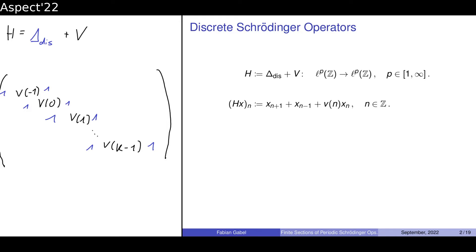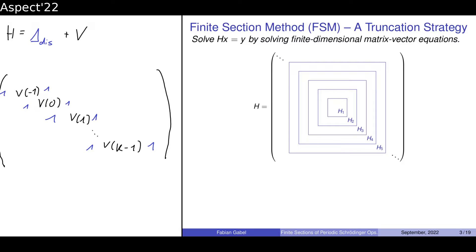We want to study equations of the form HX equals Y. It's a classical question: given an operator and a right-hand side Y, can I find an X to solve this equation? One idea that the finite section method incorporates is the idea of truncation — solving an infinite-dimensional problem by means of approximation. A computer can only handle finite dimensions, but we are lucky to have at least a countably infinite problem. The idea is to start with a finite-dimensional problem and increase the dimension step by step.